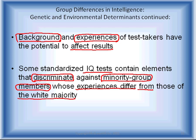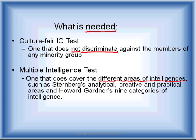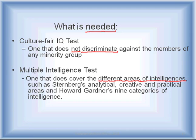We need to truly work on making tests better. What is needed includes culture-fair IQ tests that do not discriminate against any minority group, and multiple intelligence tests covering different areas — such as Sternberg's analytical, creative, and practical areas, and Howard Gardner's nine categories of intelligence. Hopefully people can work on this and we can have better tests in the future. Thank you.